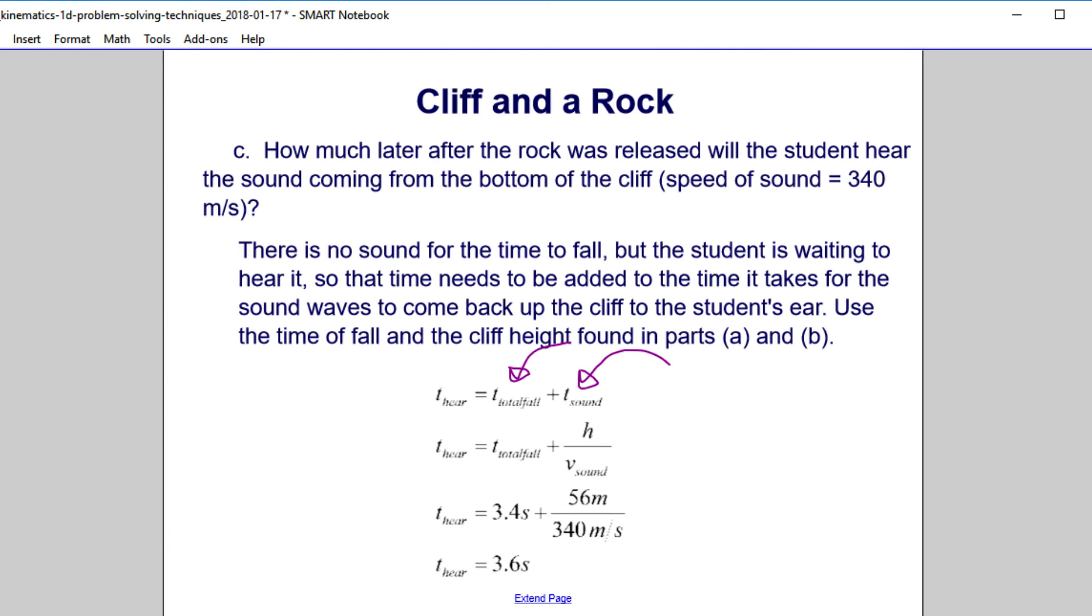So our equation for the time of sound, well, that's just distance over time, right? So let's see. Distance over time is equal to the speed of sound. And what are we trying to put in there, time, so time is going to be h over v.